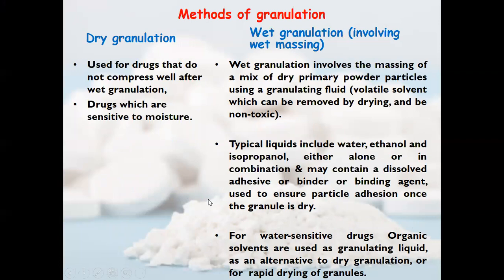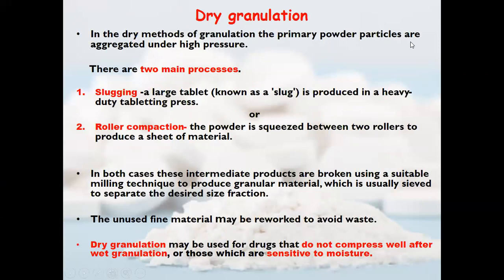Methods of granulation: there are two primary or basic methods — dry granulation and wet granulation. Dry granulation is used for drugs that do not compress well after wet granulation and for drugs sensitive to moisture. Wet granulation involves the massing of mixed dry primary powder particles using a granulating fluid — mainly a volatile, non-toxic solvent such as water, ethanol, or isopropanol — which can be removed by drying.